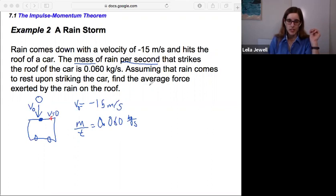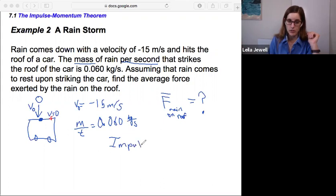It says to find the average force exerted by rain on the roof. So we're looking for the average force of rain on the roof. So as we're thinking about this, you can think about what tools do we have. We just got one, that impulse momentum theorem. That the impulse is equal to the change in momentum. So our impulse equals change in momentum, delta P.